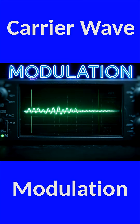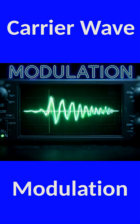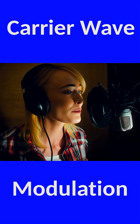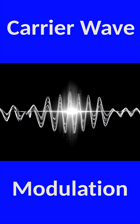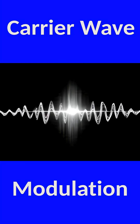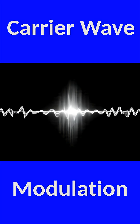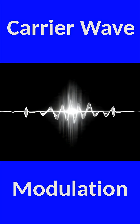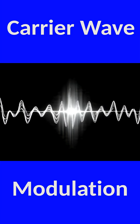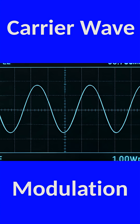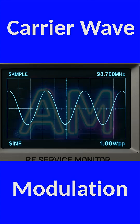Modulation is how we take information, like someone's voice, and imprint it onto that carrier wave so it can travel through the air. There are three major kinds of modulation you've definitely heard of.